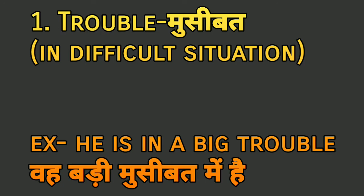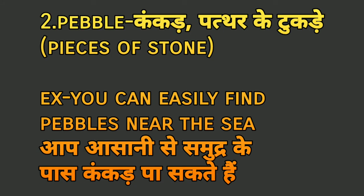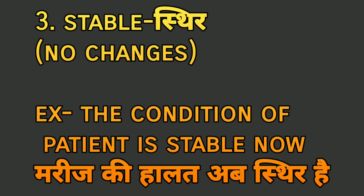The second word is 'pebbles', meaning pieces of stone. For example: 'You can easily find pebbles near the river.' The third word is 'stable', meaning no changes. For example: 'The condition of the patient is stable' — maryaz ki halat abhisthir hai.